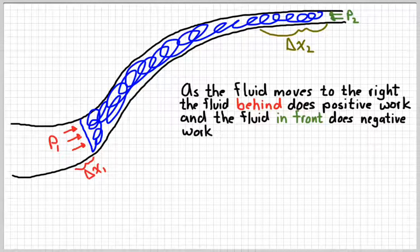So as the fluid goes to the right, the pressure due to the fluid behind it, that's the P1, does positive work. And the pressure due to the fluid in front of it, I'll call that P2, is doing negative work. On the back end, the blue chunk moves a distance delta x1. And on the front end, it moves a distance delta x2. And now remember, those distances are different because of the area. The same volume of water moves through each of those distances. But because the area of 1 is bigger, delta x1 is smaller. That's our equation of continuity.